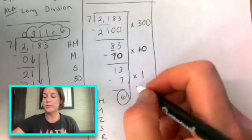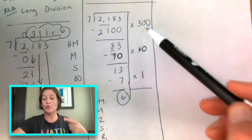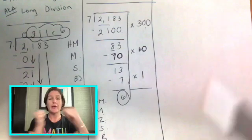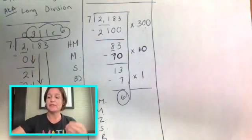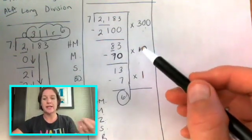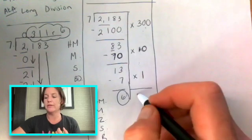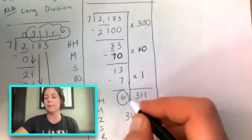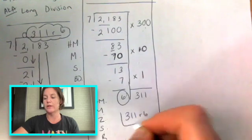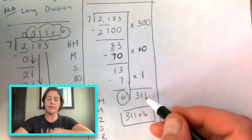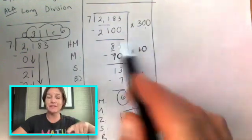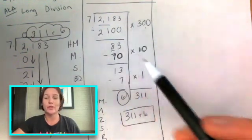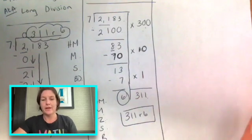Now what we're going to do is we're going to take these partial quotients because they are part of the entire quotient. And we're going to add them together. So 300 plus 10 plus one would be 311. And our answer would be 311 with our remainder of six, just like before. And again, you can multiply 311 times seven plus six, and you will get 2,183.